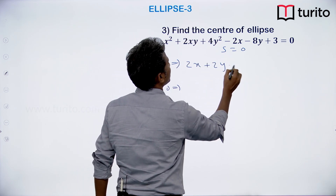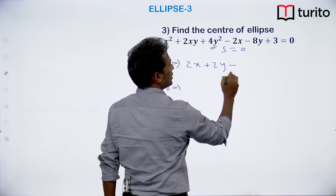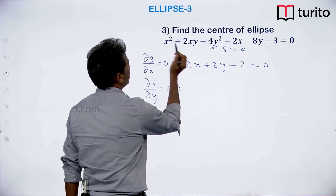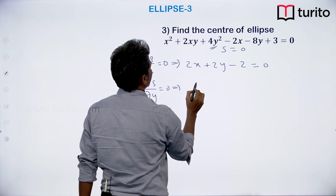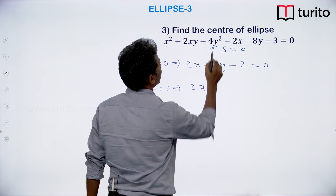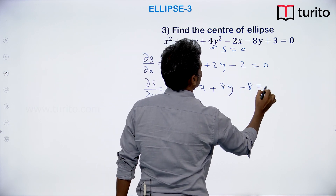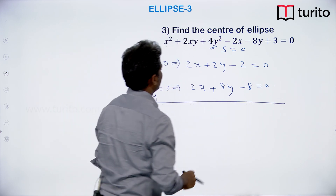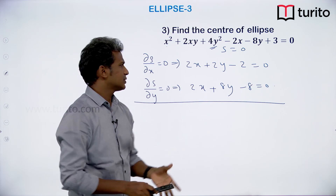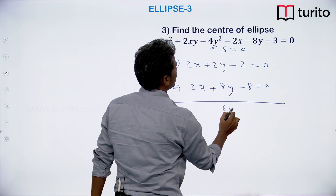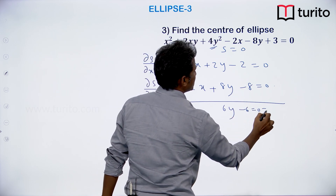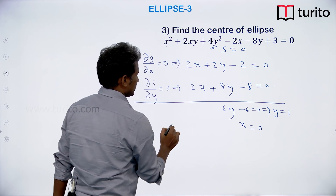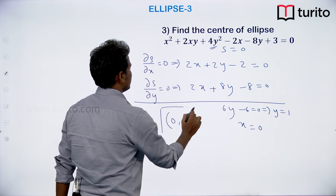Differentiating: the derivative gives 2x and 2y, while this term becomes 0. The derivative of −2x gives −2, so the first equation is 2x + 2y − 2 = 0. For the second partial derivative, x² with respect to y gives 0, so we get 2x + 8y − 8 = 0. Solving these two: subtracting gives 6y − 6 = 0, so y = 1. Putting y = 1 gives x = 0. The center of the conic is (0, 1).